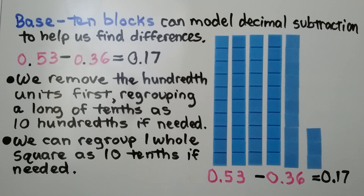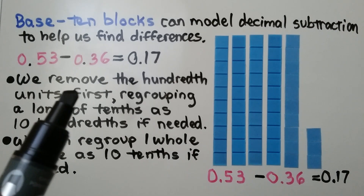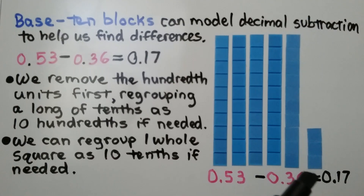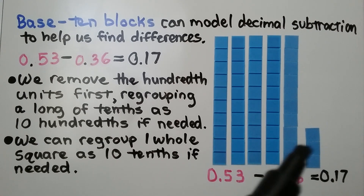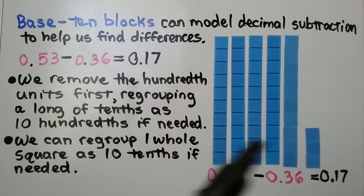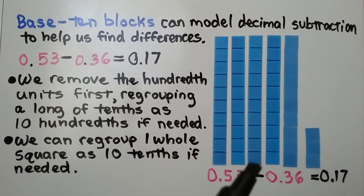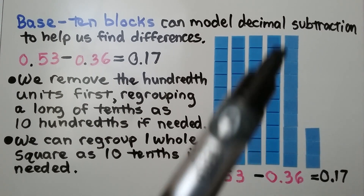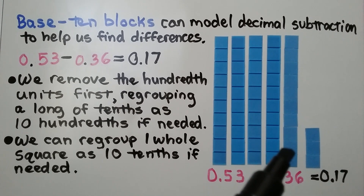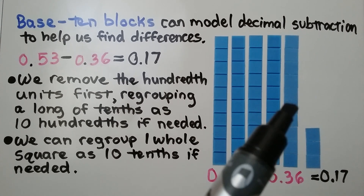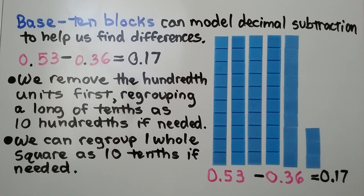We have 53 hundredths minus 36 hundredths. We remove the hundredths units first. We need to take away six of them, but we only have three here for 53 hundredths. We can trade one long of a tenth as ten hundredths. Now we have ten of these, so we can take six away.